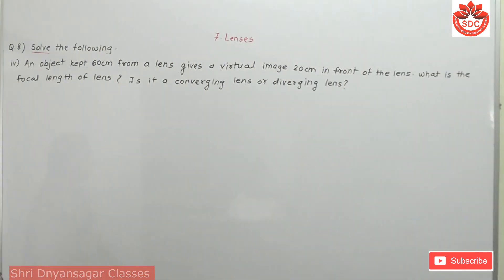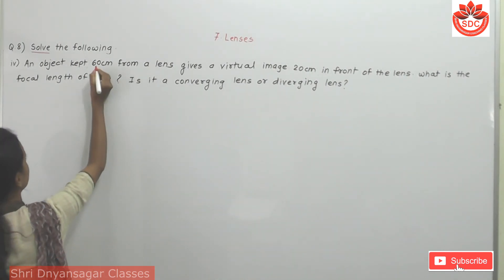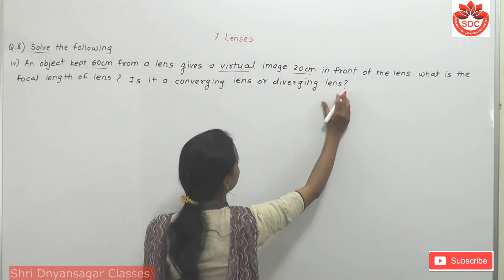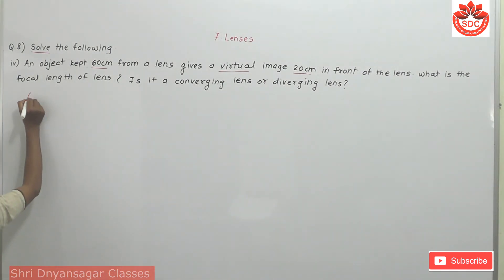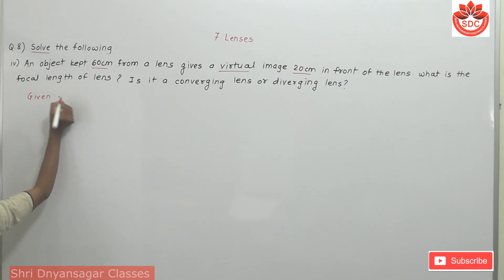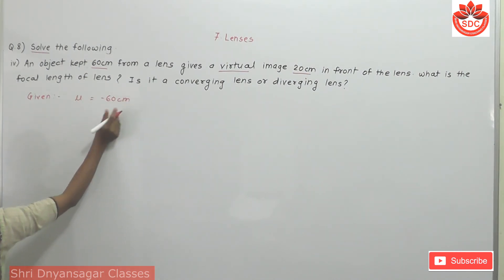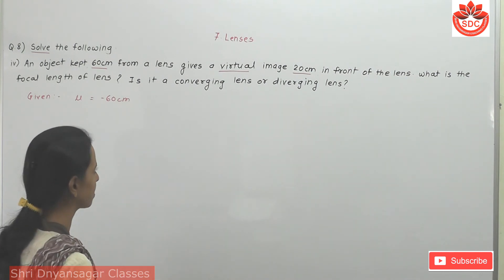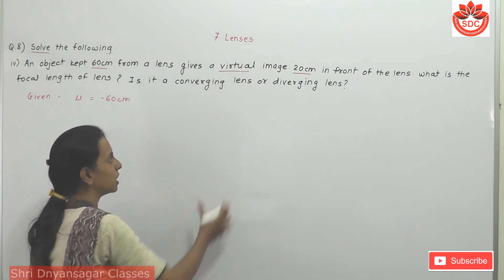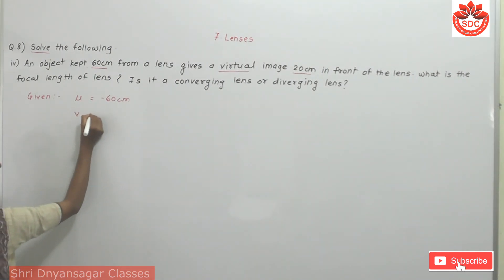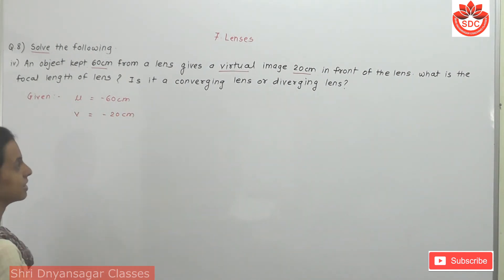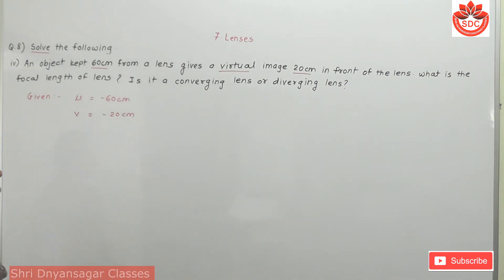This is the answer to question four — first attempt. Now the corrected fourth question: an object placed 60 cm from a lens gives a virtual image 20 cm in front of the lens. Corrected given: U is equal to minus 60 cm, because the object is placed on the left-hand side of the lens. A virtual image means V is negative, so V equals minus 20 cm. We need to find the focal length and whether the lens is converging or diverging.